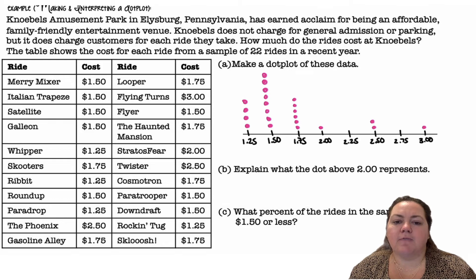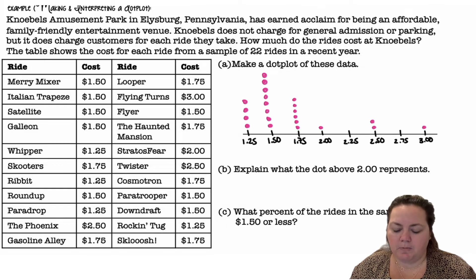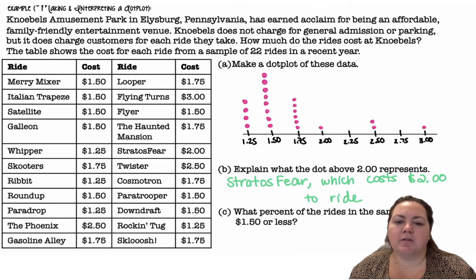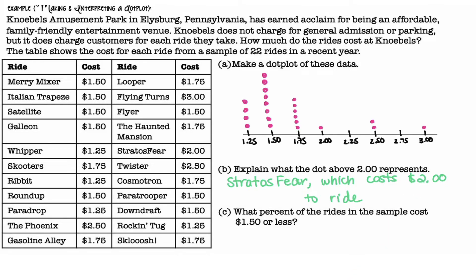Explain what the dot above two represents. There's only one dot above two, so I can go and look and see what ride that matched up with — that was the Stratosphere, which cost $2 to ride. What percent of the rides in the sample cost $1.50 or less? I'm going to count all the dots that are $1.50 or less, which is 12 out of the total 22 rides, which is 0.545 or 54.5%.